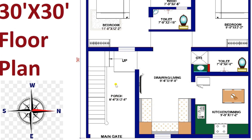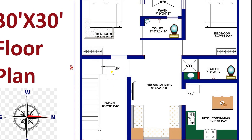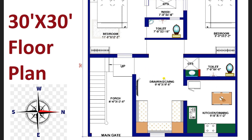Now I am entering the plan. This is the main entrance of our plan. When we enter, on the right side you can see a lavish area of drawing and living hall available of size 9 feet 6 inches by 19 feet 8 inches. In the hall we have placed a sofa set along with the LCD.